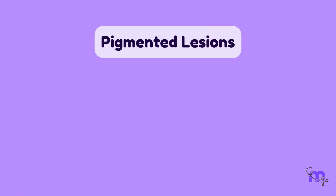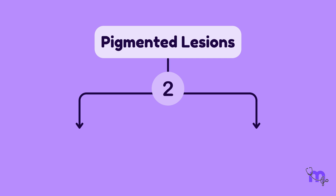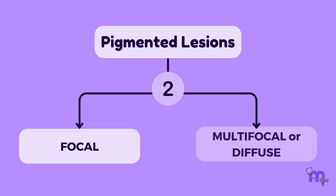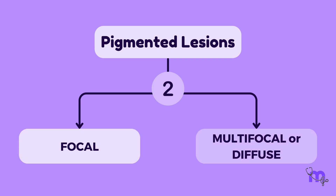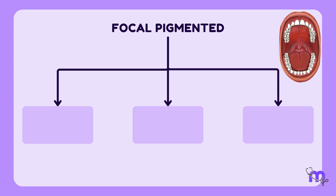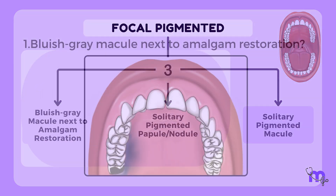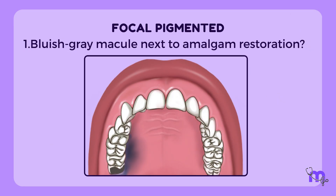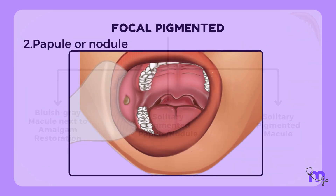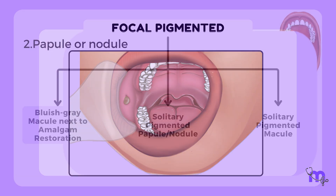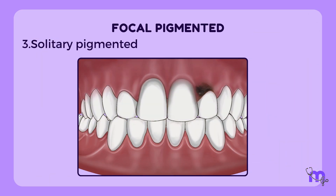Pigmented lesions come in two main categories: focal and multifocal, or diffuse. When encountering a focal pigmented lesion in the mouth, dentists consider three key questions: Is it a bluish-gray macule located next to an amalgam restoration? Is it a solitary pigmented papule or nodule? Is the lesion a solitary pigmented macule?